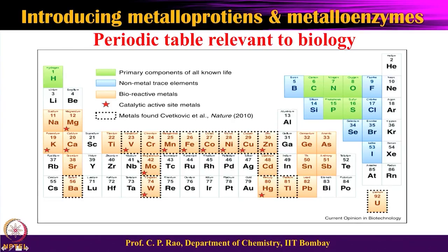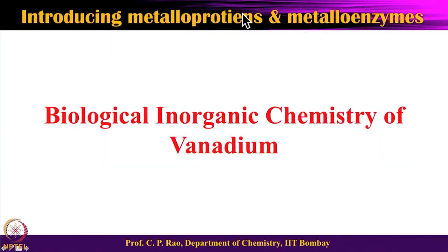I will spend a lot of time on iron enzymes because we have both heme-based and non-heme-based systems. We will also spend considerable time on copper and zinc, and to some extent molybdenum. For other cases we will cover only a limited number of examples. Let us now start with the biological inorganic chemistry of vanadium.